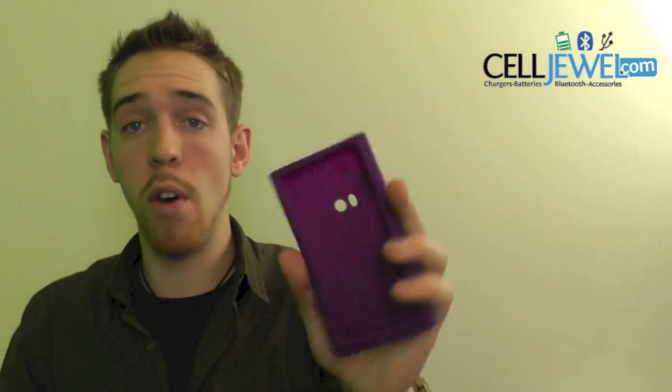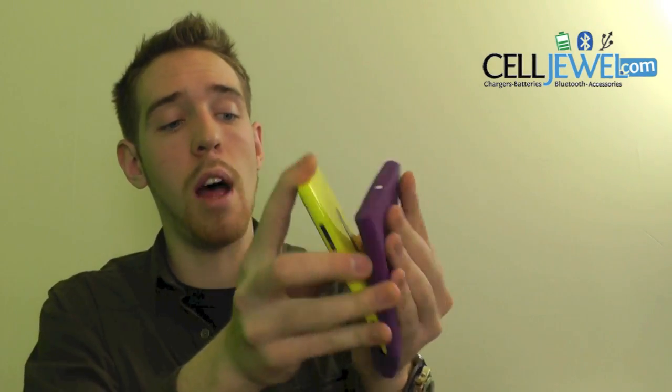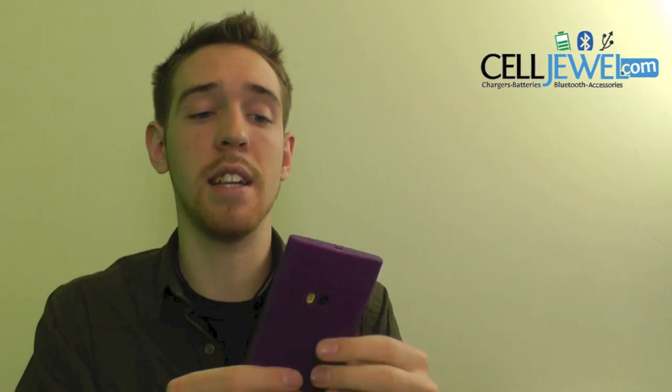First thing is it protects your phone from wear and tear from daily use, little bumps and scrapes and things like that. It's rubberized so it'll absorb the vibrations that can rattle the parts on the inside of your phone, and it also provides excellent grip for your fingers so you'll be less likely to drop it.